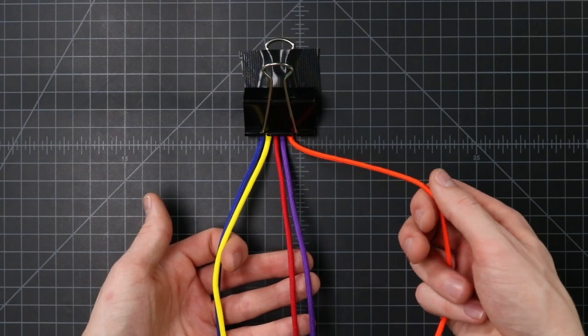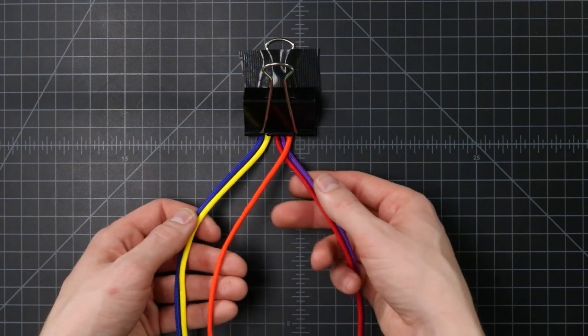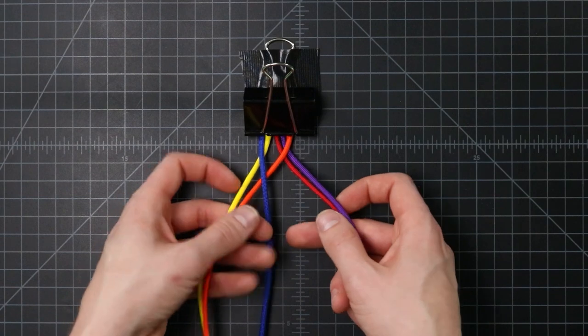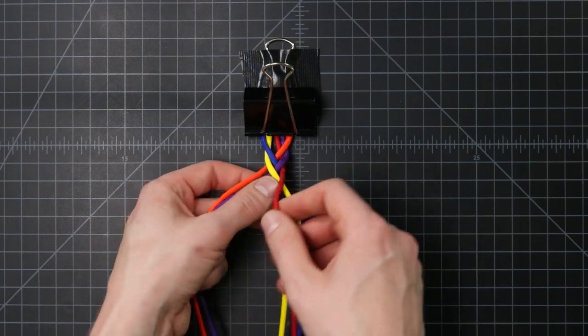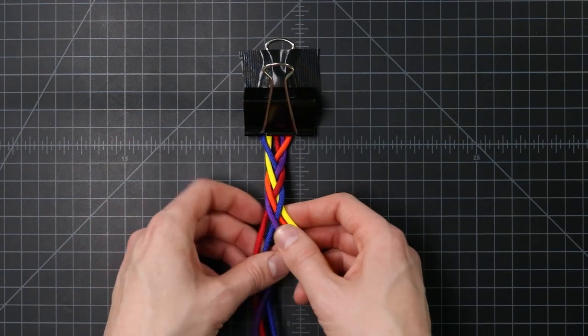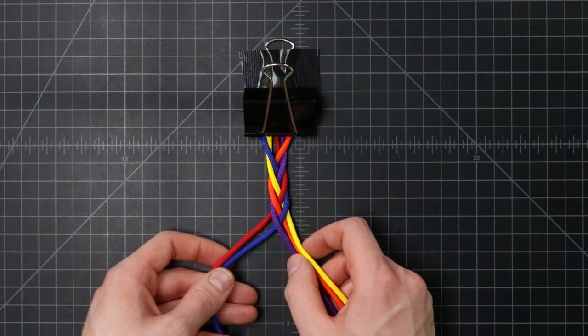We can take one side cord and bring it to the middle of the other four in this case. Left cord, in between those other four, and just go back and forth, bringing the outside cord to the middle of the remaining strands. And then we're left with a traditional-looking braid in five colors.